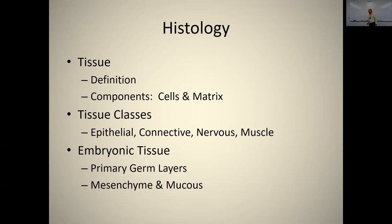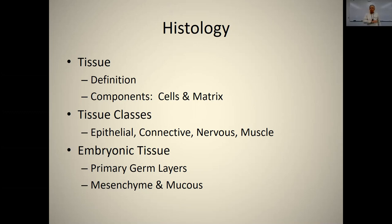Epithelial tissue usually lines body cavities and the outside of the body. Nervous tissue sends messages and coordinates things. Muscle tissue contracts and generates force. Connective tissue does lots of different things — it's the most variable type of tissue. Some connective tissue is for storage, some for transport, some for structural support.